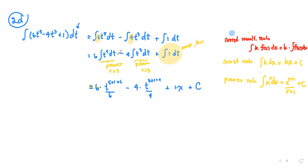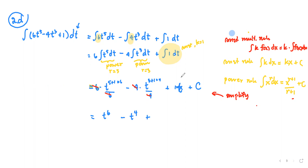At this step we've applied all the anti-derivative rules; the integral sign and the differential dt have canceled. Now we simplify — reduce the numerical fractions as much as possible. The 6 divided by 6 and 4 divided by 4 simplify cleanly. The variable is t, not x, so the last term is simply t.